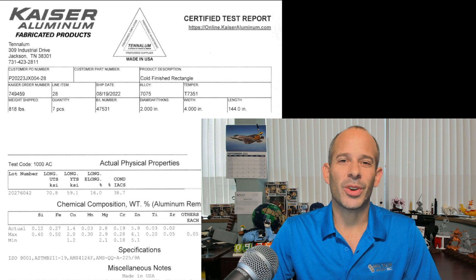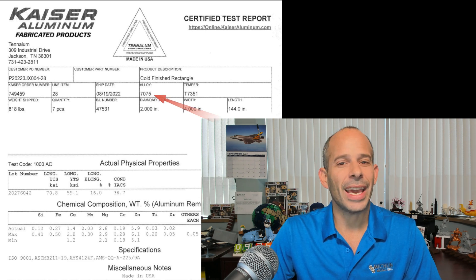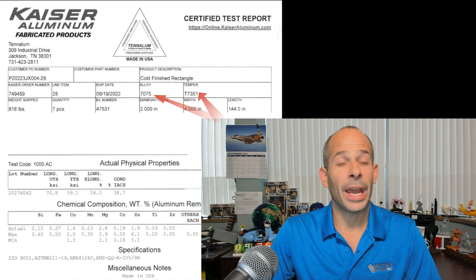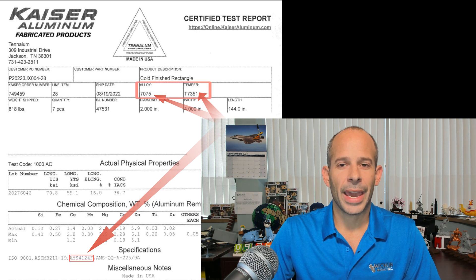Last week we showed a test report for an aluminum 7075 alloy in a T7351 temper, manufactured to AMS 4124. Here's the alloy and temper as you can see here, and the spec down here.